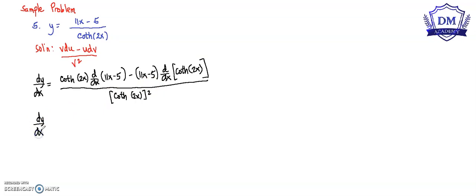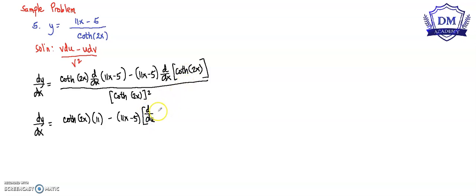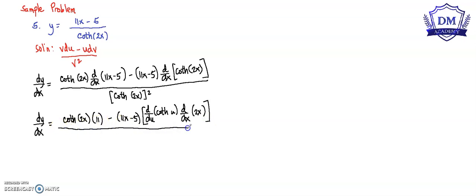The derivative of y with respect to x equals the hyperbolic cotangent of 2x multiplied by the derivative of (11x − 5), which is 11. Then minus (11x − 5) multiplied by the derivative of the hyperbolic cotangent of 2x. For this part, we use the chain rule: d/du of hyperbolic cotangent of 2x, multiplied by d/dx of 2x. All over the square of hyperbolic cotangent of 2x.